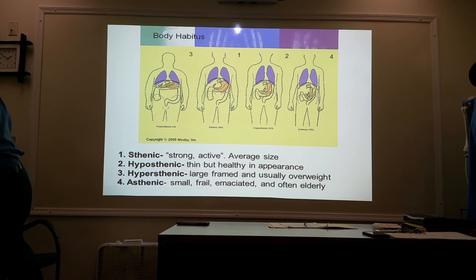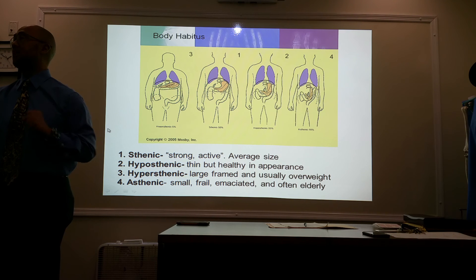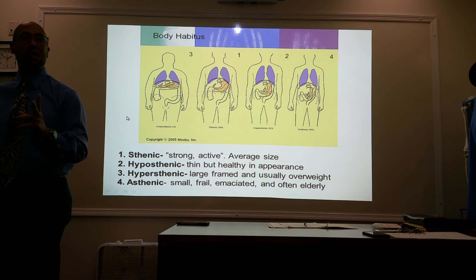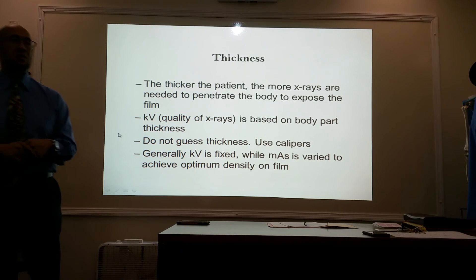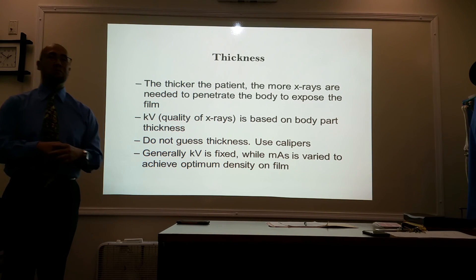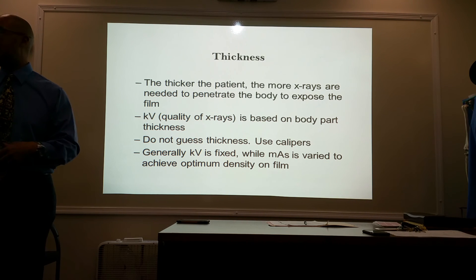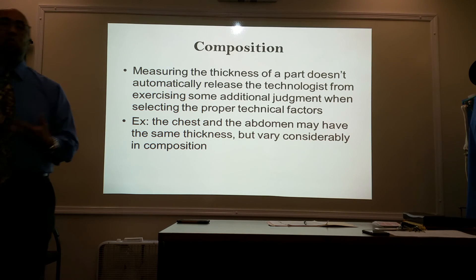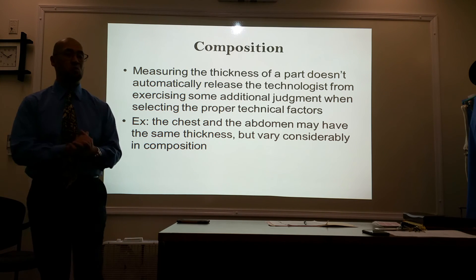Not only are you going to be familiar with thickness, but body habitus is also going to play an important part in where you're going to direct your central ray — the center of your x-ray beam — to the body part. KV is based on body part thickness. The thicker the body part, the more KV we're going to apply. However, we also have to take into consideration the composition of what it is we're going to x-ray.